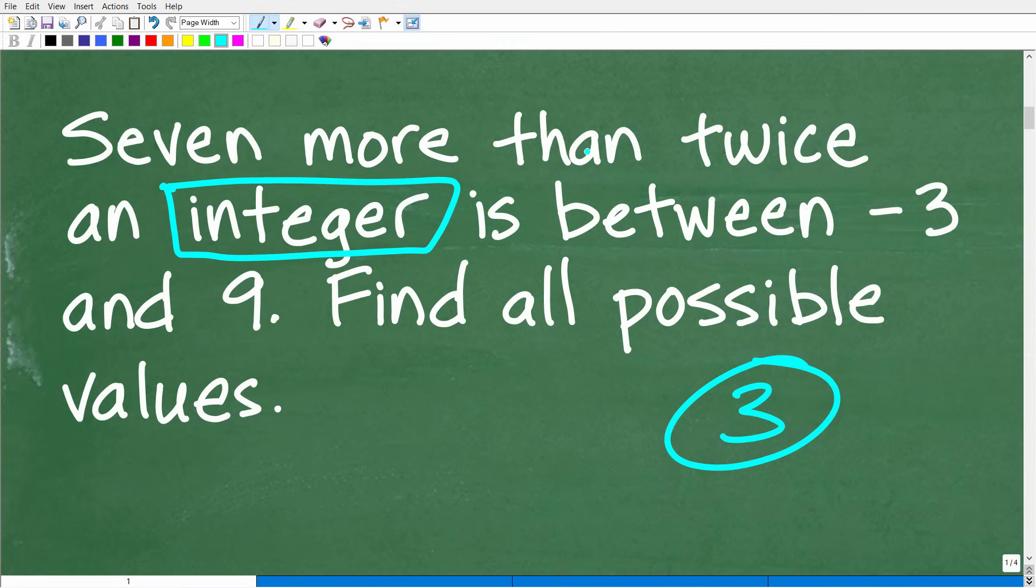We have this integer, and it's seven more than twice this integer. But it's between these values, negative three and nine. This between part is kind of a flag telling ourselves we need to set up an inequality.